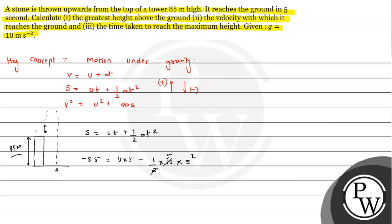Solving the equation: we get 125 − 85 = 5u, which gives 40 = 5u, so u = 40/5 = 8 meters per second. So the stone was thrown with an initial velocity of 8 meters per second upward.